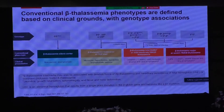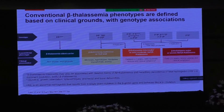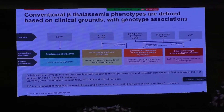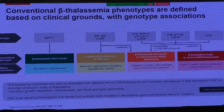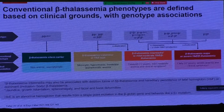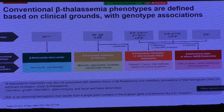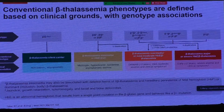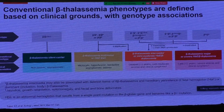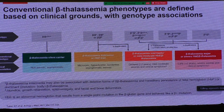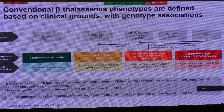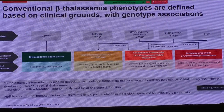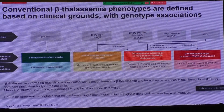All of these were related to certain clinical presentations — from no anemia, no transfusion, to mild anemia, to moderate anemia with splenomegaly, to severe anemia requiring blood transfusion for life, for survival — and this would be called beta-thalassemia major. So these are three different ways of looking into thalassemia. This comes from a very good review we published in 2021 in the New England Journal of Medicine.